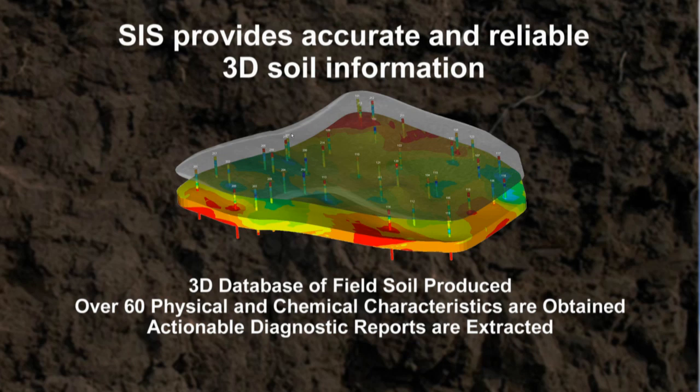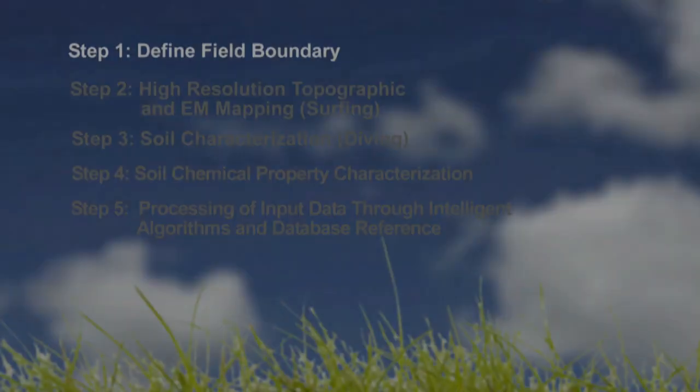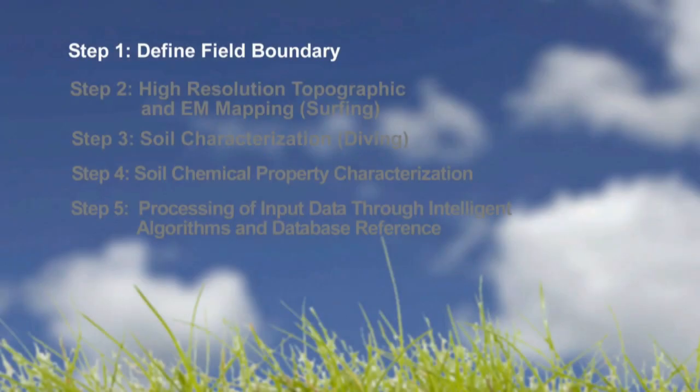The resulting soil is hugely variable. The Soil Information System, or SIS, provides the world's most accurate three-dimensional soil information to enable more precise farming. There are five steps to the SIS mapping process.